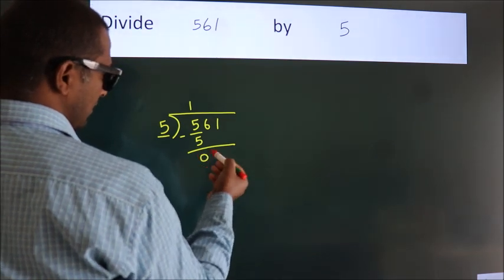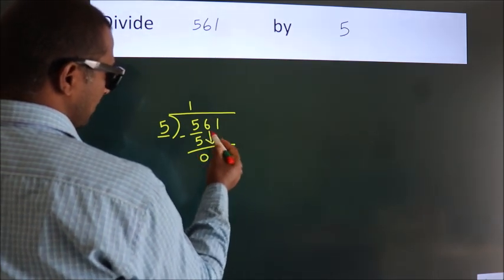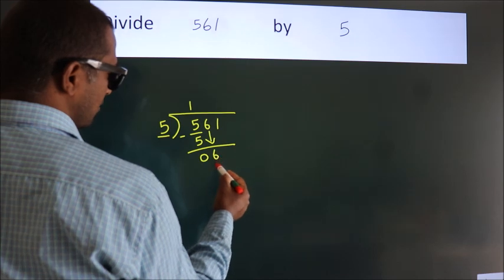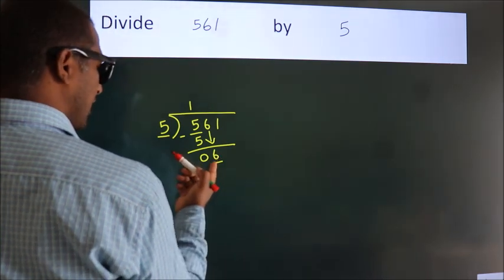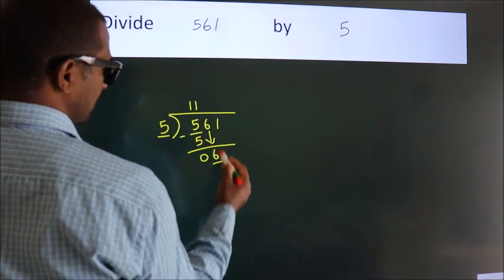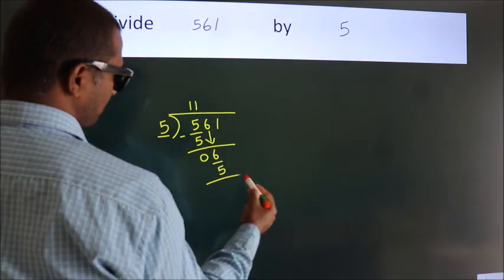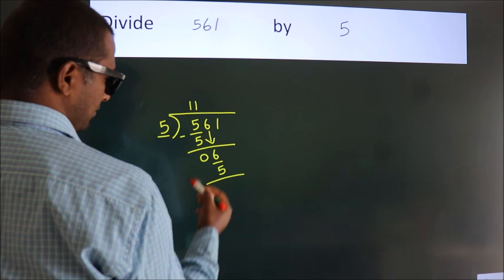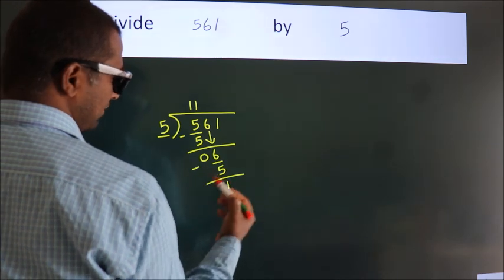After this, bring down the beside number. So 6 down, so 6. A number close to 6 in the 5 table is 5 once is 5. Now we subtract, we get 1.